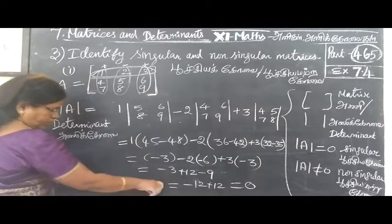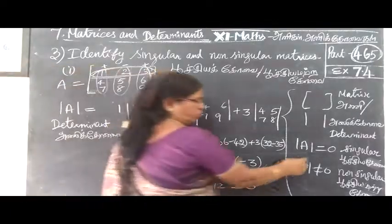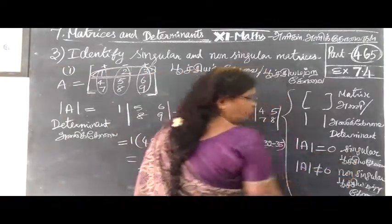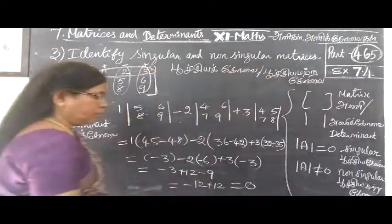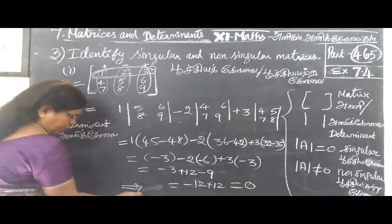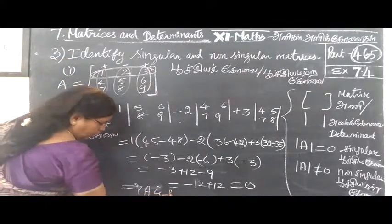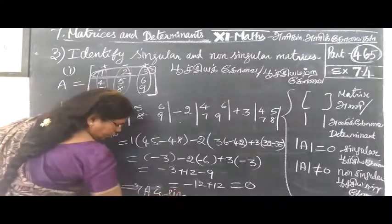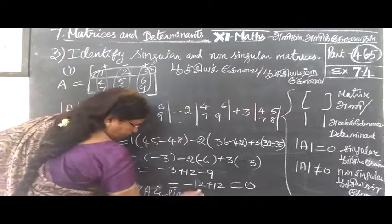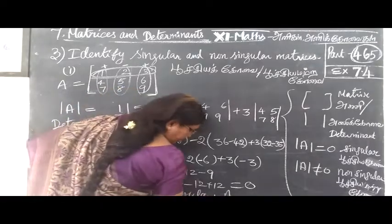So, zero equals zero — zero means singular matrix. Therefore, this implies A is singular.